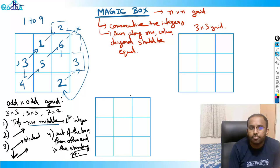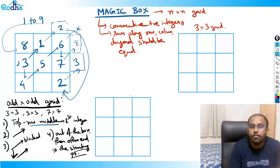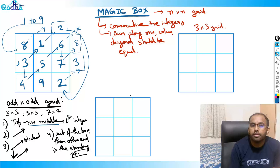So come one step down: fill 7. Again diagonally up: 8 — but we're outside the box, so go to its other end and fill 8 there. Then diagonally up: 9 — also outside, so move to the other end. Fill 9 there.